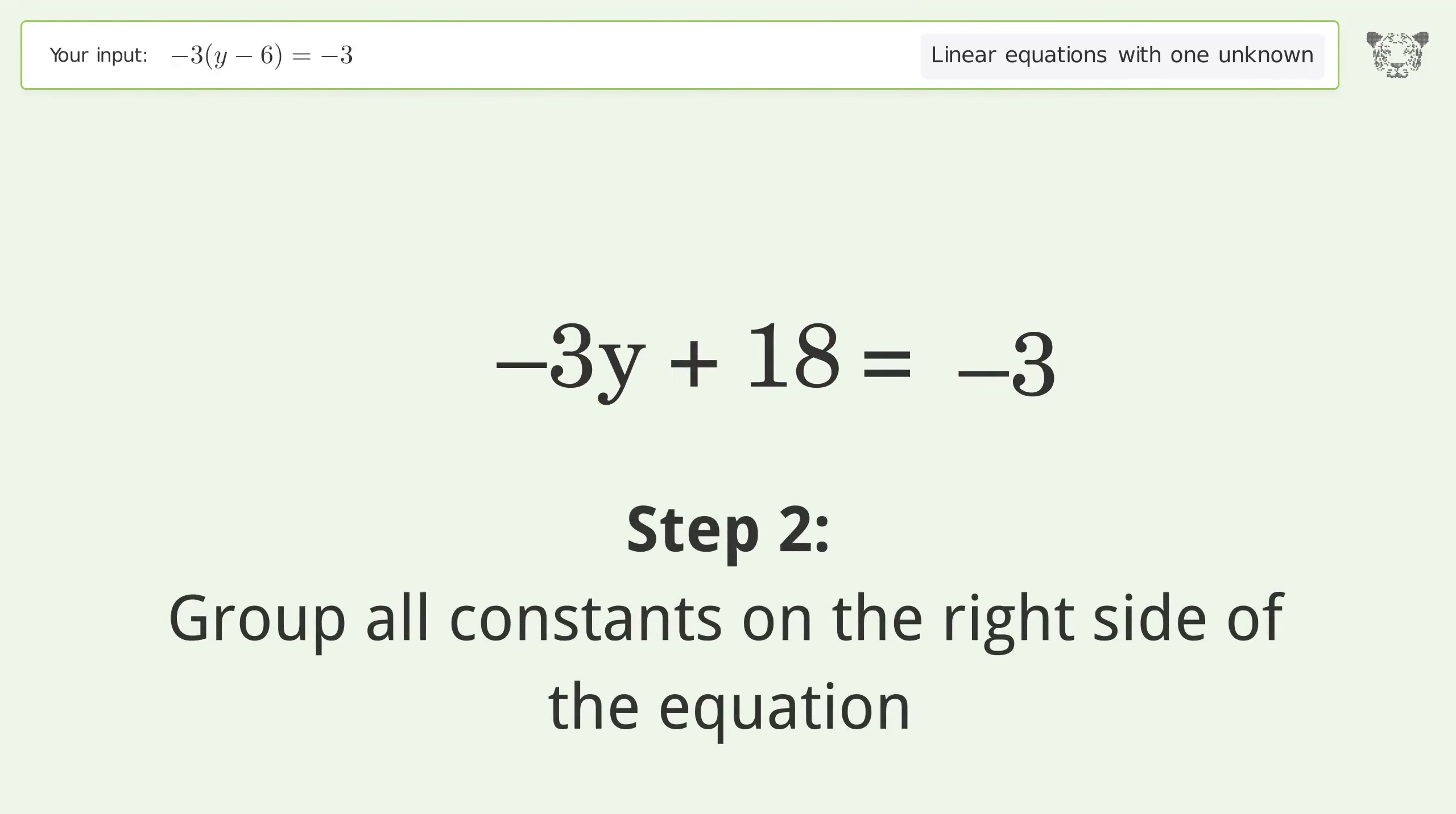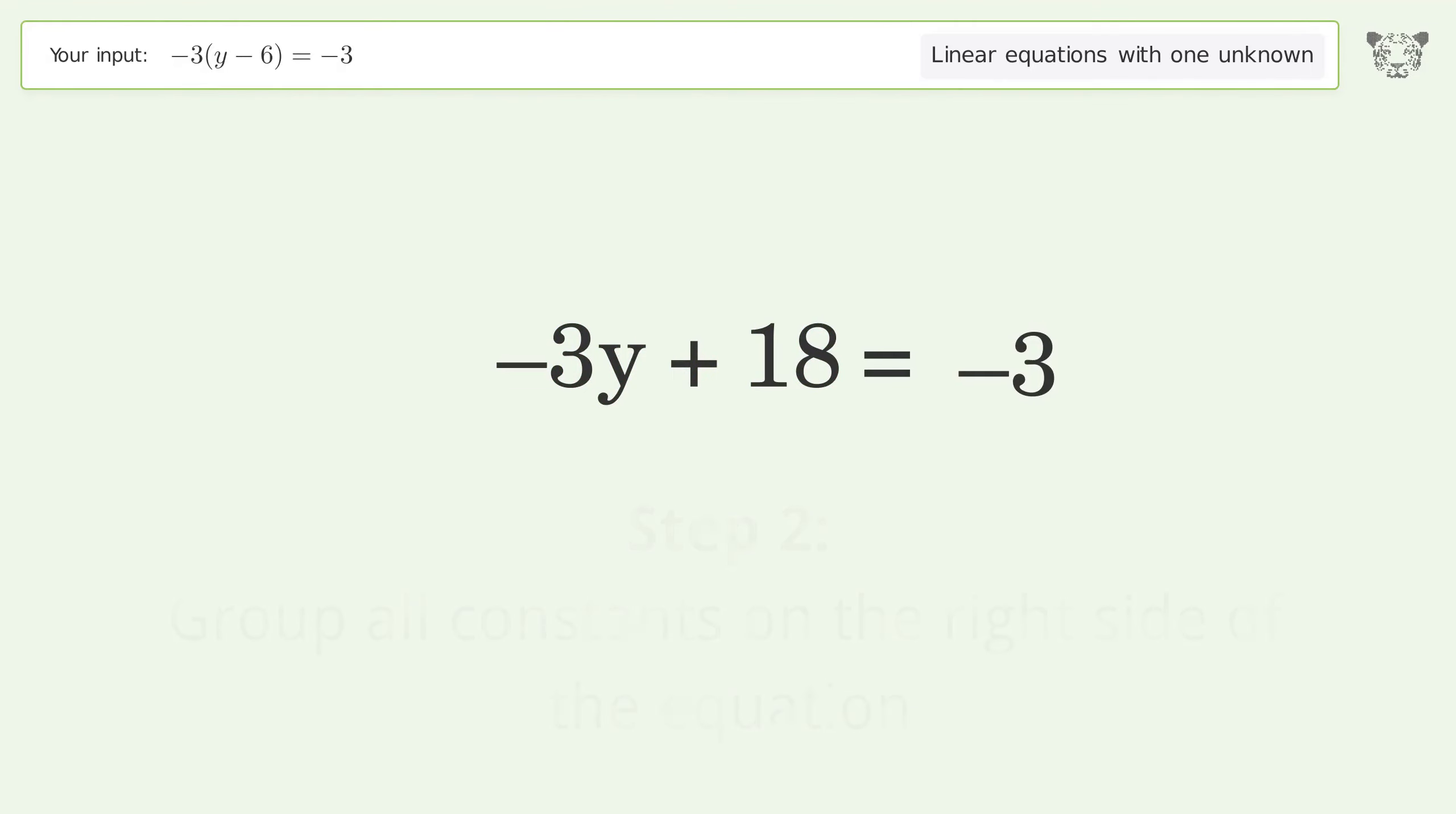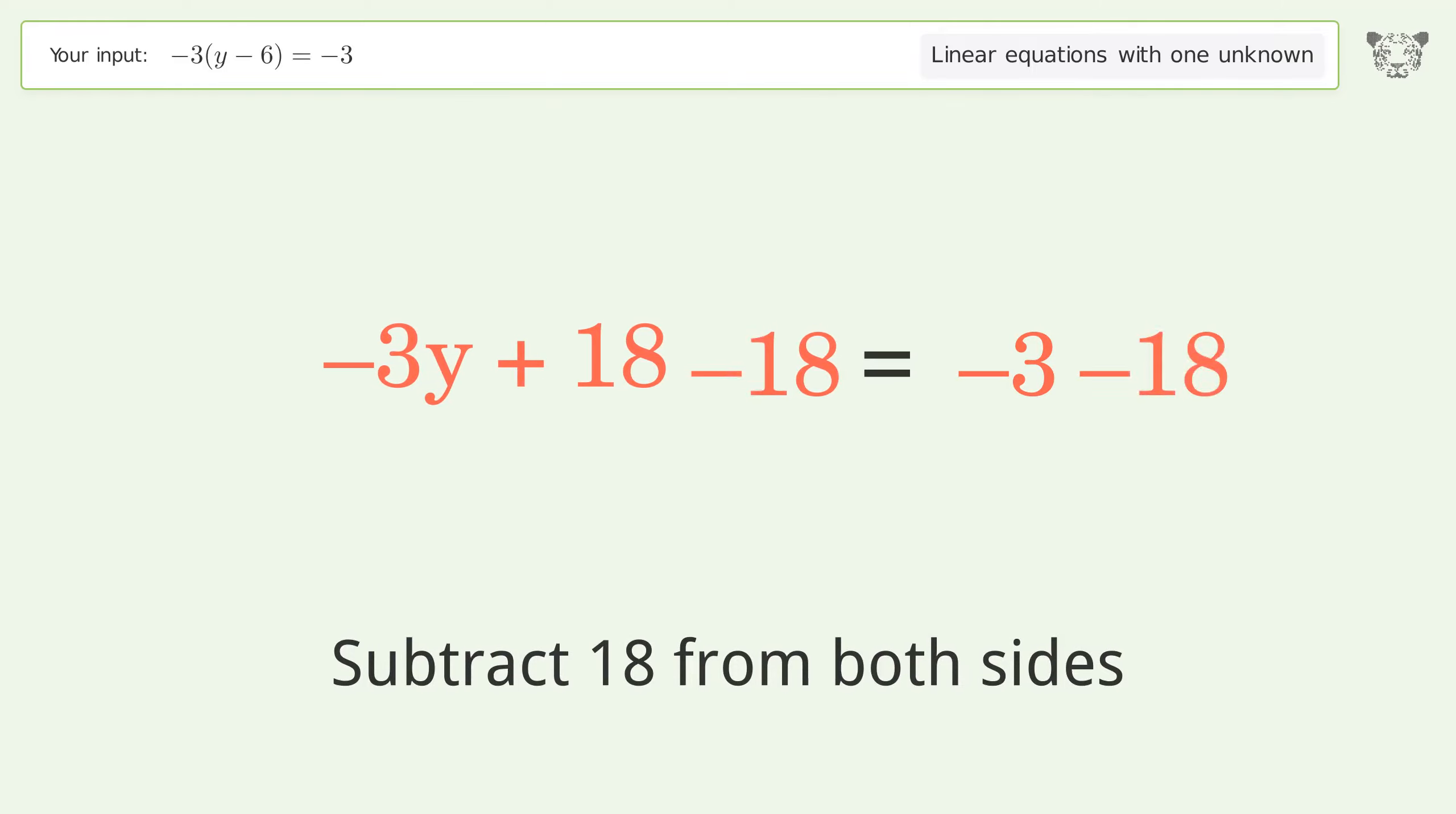Group all constants on the right side of the equation. Subtract 18 from both sides, then simplify the arithmetic.